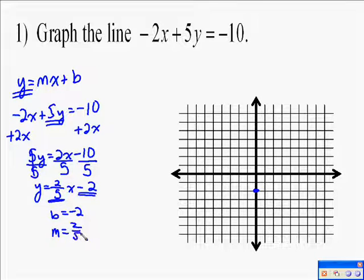My slope is 2 fifths, and so I need to use rise over run, where the top number is how far up and down I go, the bottom number is how far left and right. Well, since they're both positive, I'm going to go up, which is positive, and to the right, which is positive. So up 2, to the right 5.